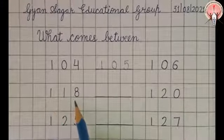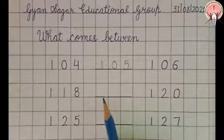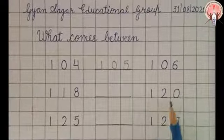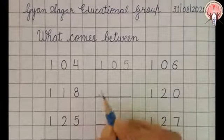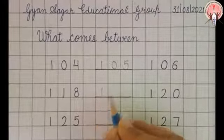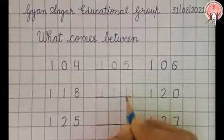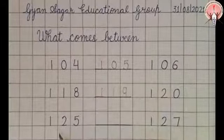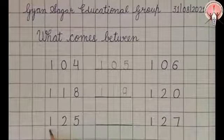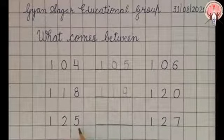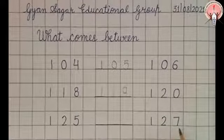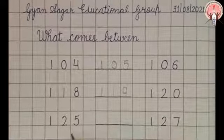118, 119, 120. So we will write here 119. Okay, next is 125 and 127. Let's start